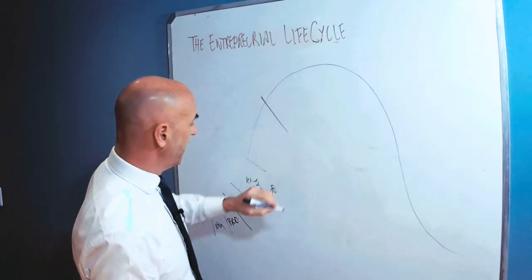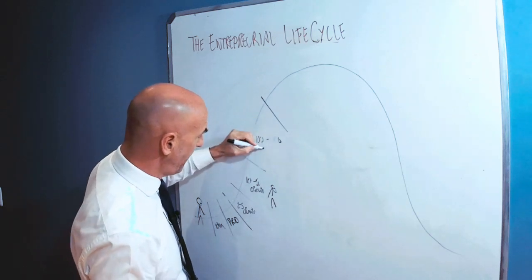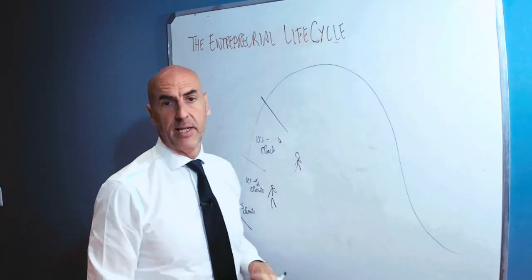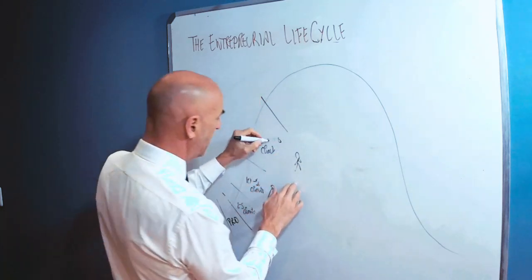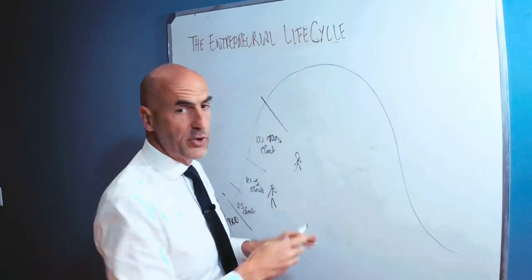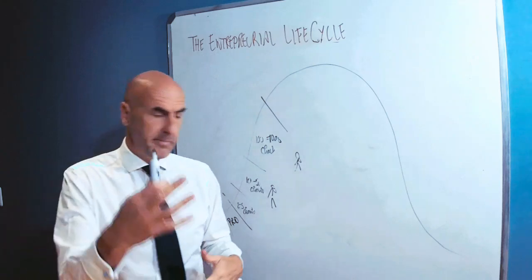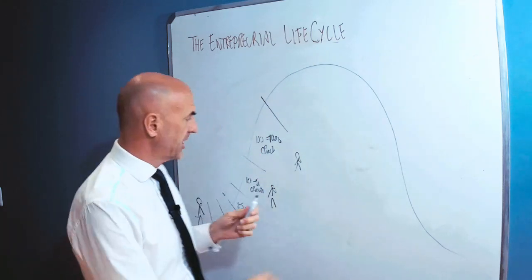And then we go into the, let's call it the 100 to 1000 clients phase. This is a phase where you are completely out of your depth. And I'll explain to you just now what happens in this phase. But this is a phase about fine tuning processes, systems, back office, delivery, just in time, logistics, product development, manufacturing, high speed manufacturing and the likes.